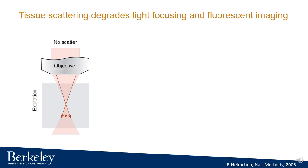Optical microscopes have been widely used in biological research. For example, in optogenetics, light is focused to photostimulate opsins. When there is no tissue scattering, light can be focused into a very tight spot by an objective lens.